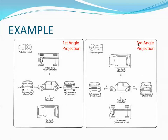Here is an example with a car — this is the first angle projection versus third angle projection. In first angle projection, the front view is at the top, and the top view is below the front view. The left side view is drawn on the right side, so you see the seats and interior from that side. The right side view — which is the rear end of the car — is placed on the left. The bottom view is shown at the bottom.